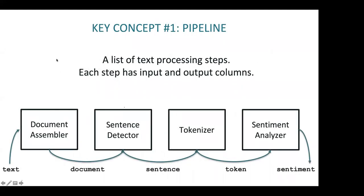There are four key concepts to understand when working with the library. The first is the pipeline — basically a list of processing steps. For example: take initial text, turn it into a document (DocumentAssembler), then sentence detection (outputs a list of sentences), then tokenization (produces list of tokens), then a sentiment analyzer working at the token or sentence level. In Spark NLP, a pipeline is the main way you configure what you want to do, and it's super configurable.